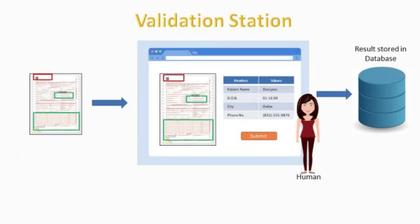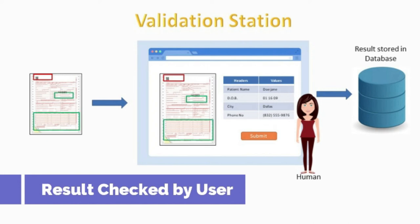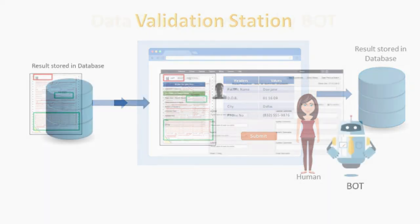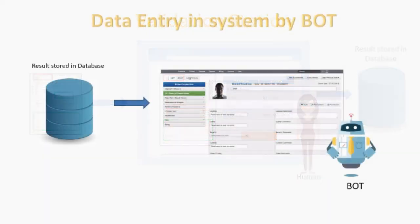In the validation process, the user can check the extracted content in the validation station, and the bot notifies the user if the confidence score is low to confirm the data. The bot then logs into the system, enters the extracted data to complete the claim forms, and processes it.